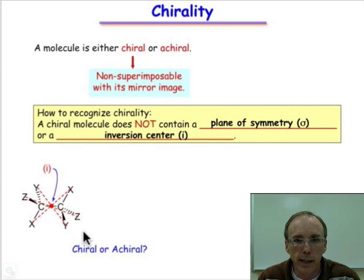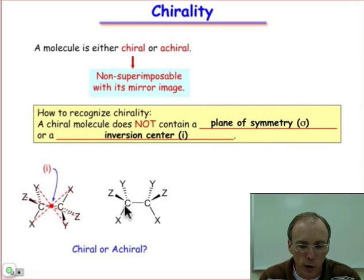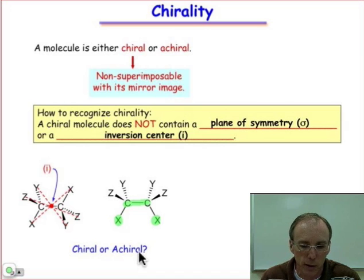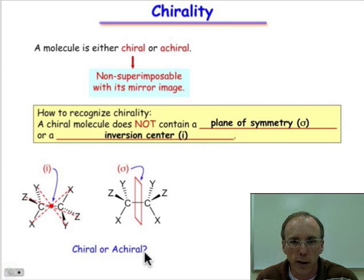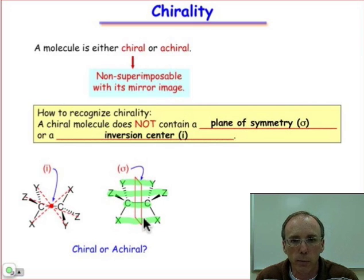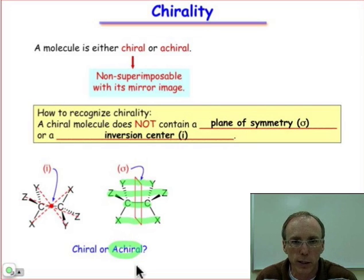Now, that's one conformation, but I said any conformation where we could find either an inversion center or a mirror plane, we would make the conclusion that this molecule is achiral. It turns out, if we rotate about the carbon-carbon bond, we can find a conformation in which there's not an inversion center, but there's a mirror plane — a plane of symmetry, σ. You can see that in this conformation, the left half and the right half are related through reflection, so that every atom, y, z, x, or the carbon, when reflecting through that mirror plane, finds the exact same atom on the opposite side. In this conformation, we see that the molecule is achiral. We've reached the same conclusion, and we should — but it's because of the presence of a plane of symmetry.